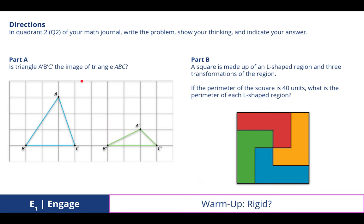In quadrant 2 of your math journal, write the problem, show your thinking, and indicate your answer. Part A we're going to do together now. When we discussed this, we discovered that this A'B'C' green triangle is not the image of the pre-image ABC triangle, which is in blue. The reason for that is because it does not preserve the same side lengths and angle measures.